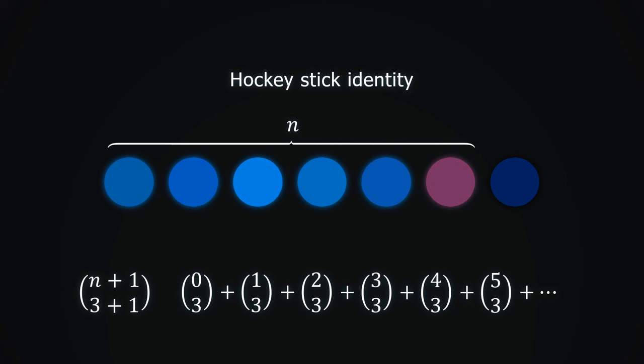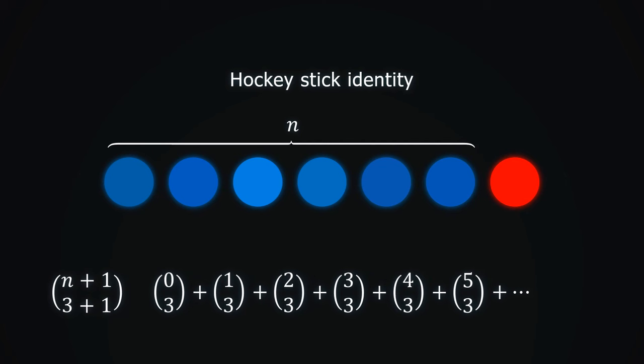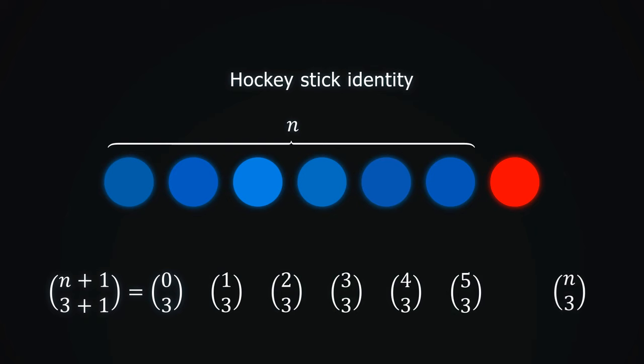And so on, until the red object moves to the last place. Then, from n objects, we will choose 3. There are n choose 3 ways to do this. We can condense this formula into a sum.